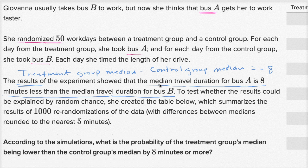To test whether the results could be explained by random chance, she created the table below, which summarizes the results of 1,000 re-randomizations of the data with differences between medians rounded to the nearest five minutes.